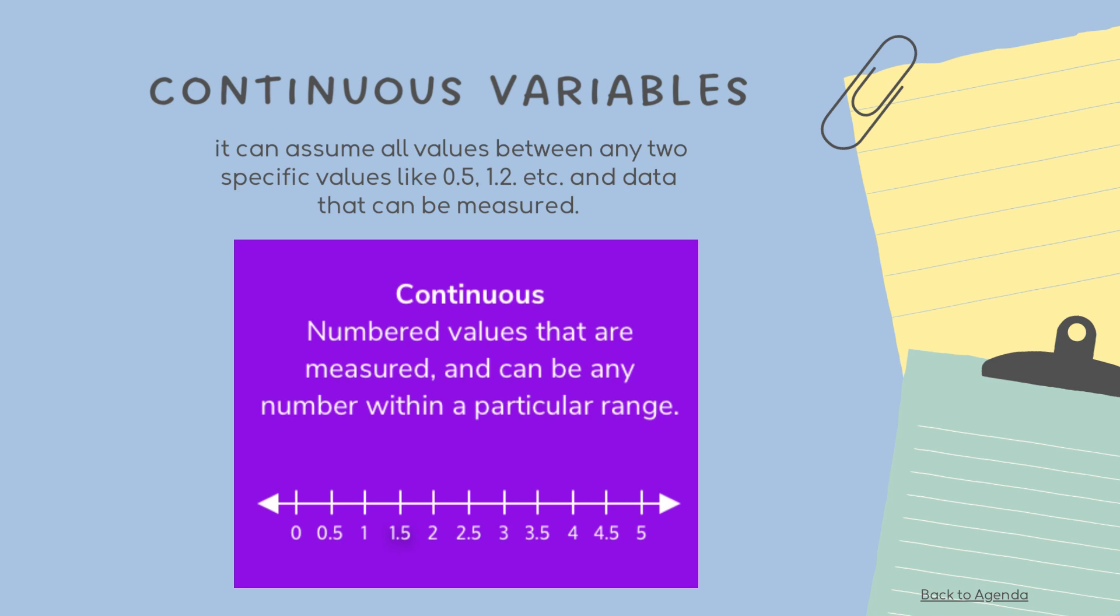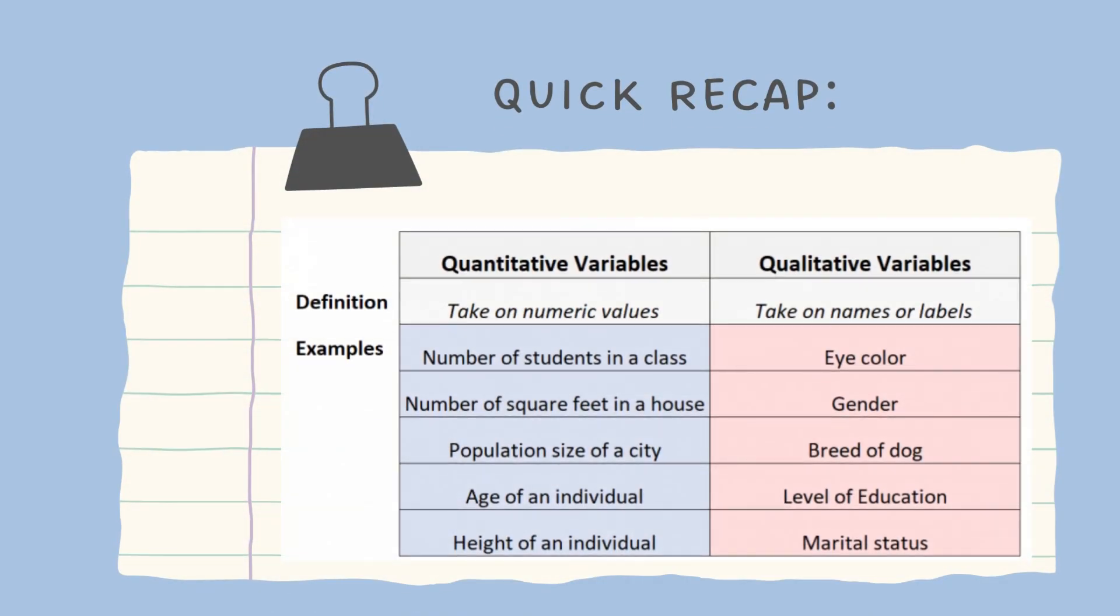That's all for our quick discussion. For a quick recap, quantitative variables take on numeric values. Number of students, number of square feet in a house, population of a city, age of an individual, height of an individual.